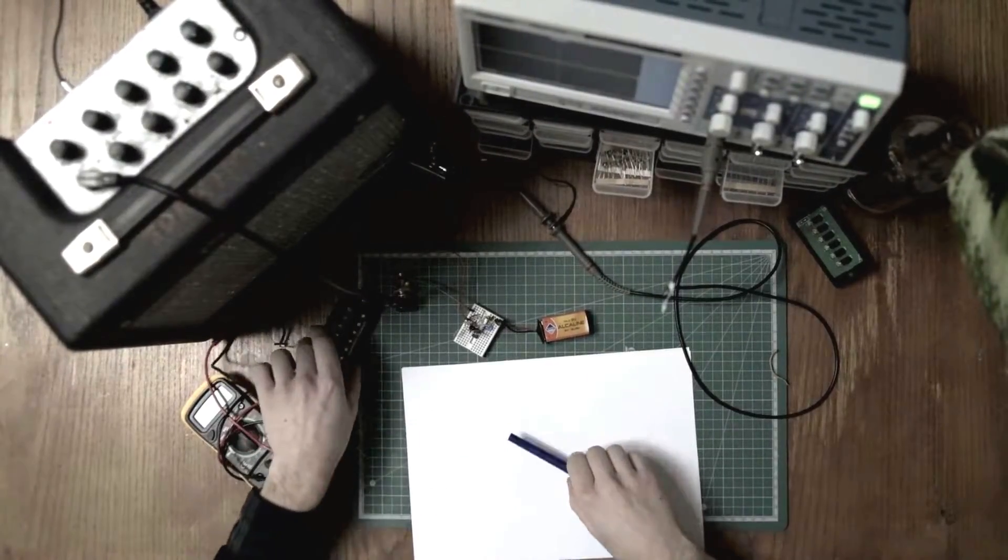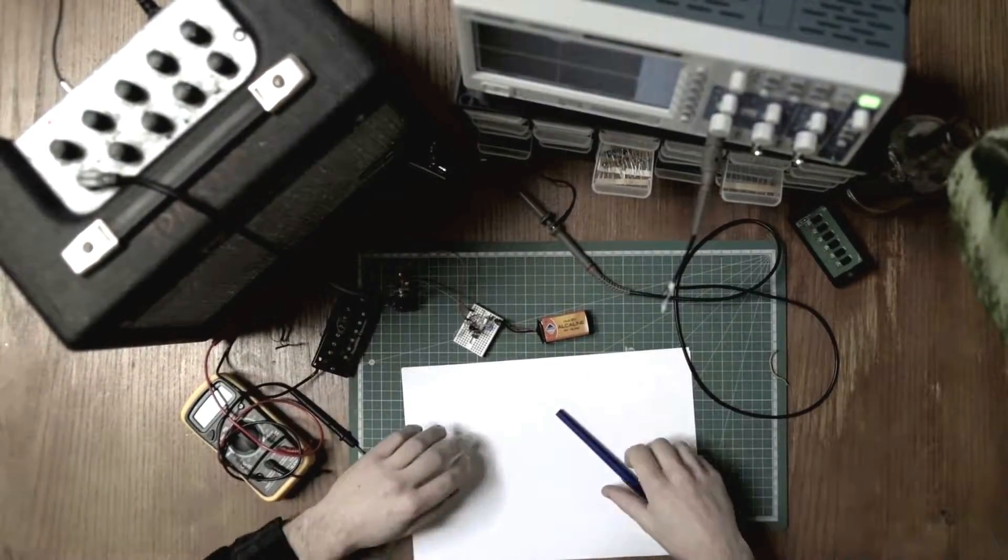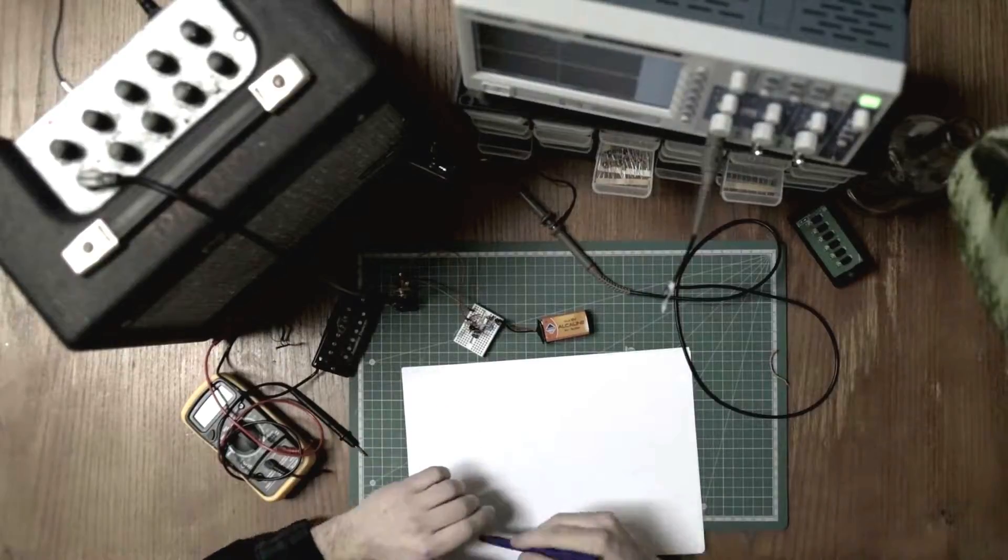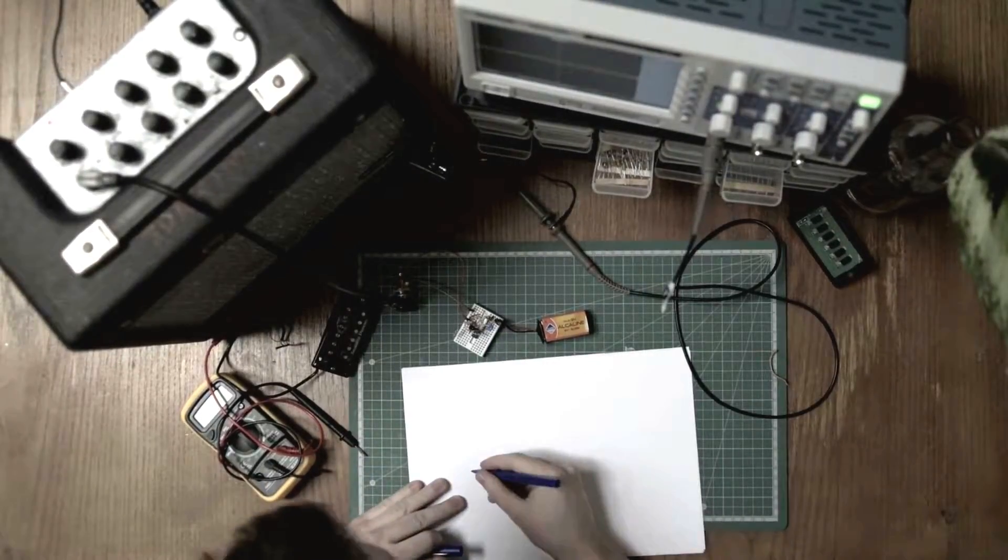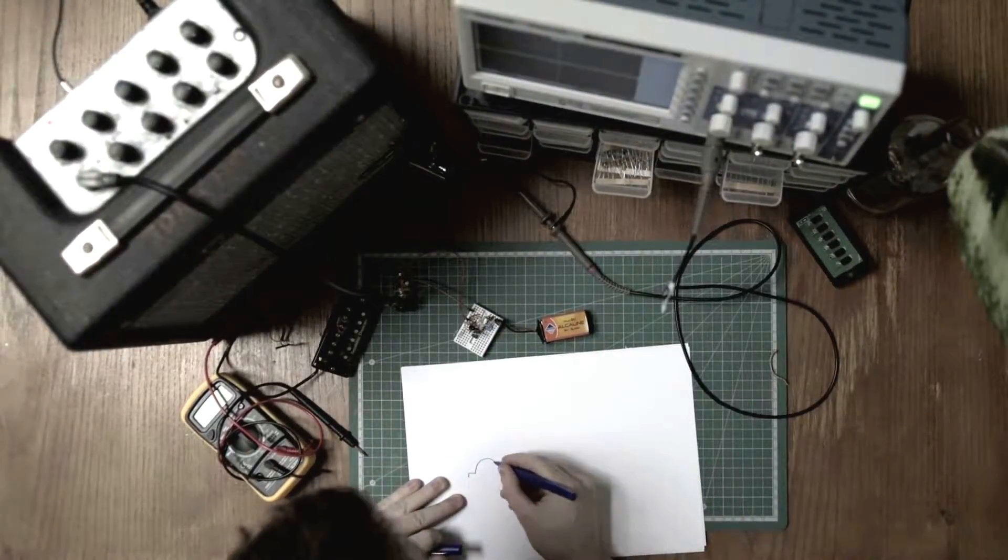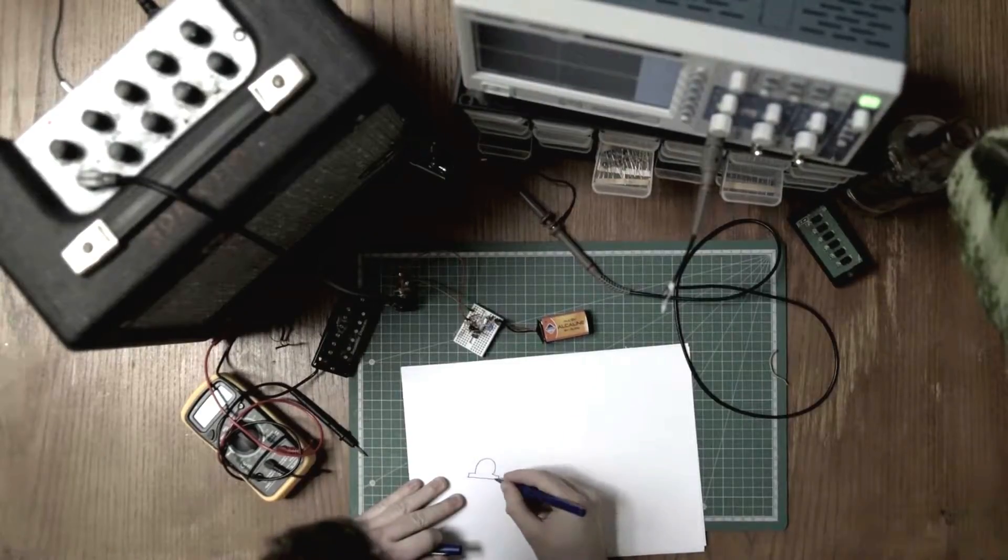So we're going to talk today about how optical pickups work. Basically, the idea is that here you have a light emitting diode that looks like this.